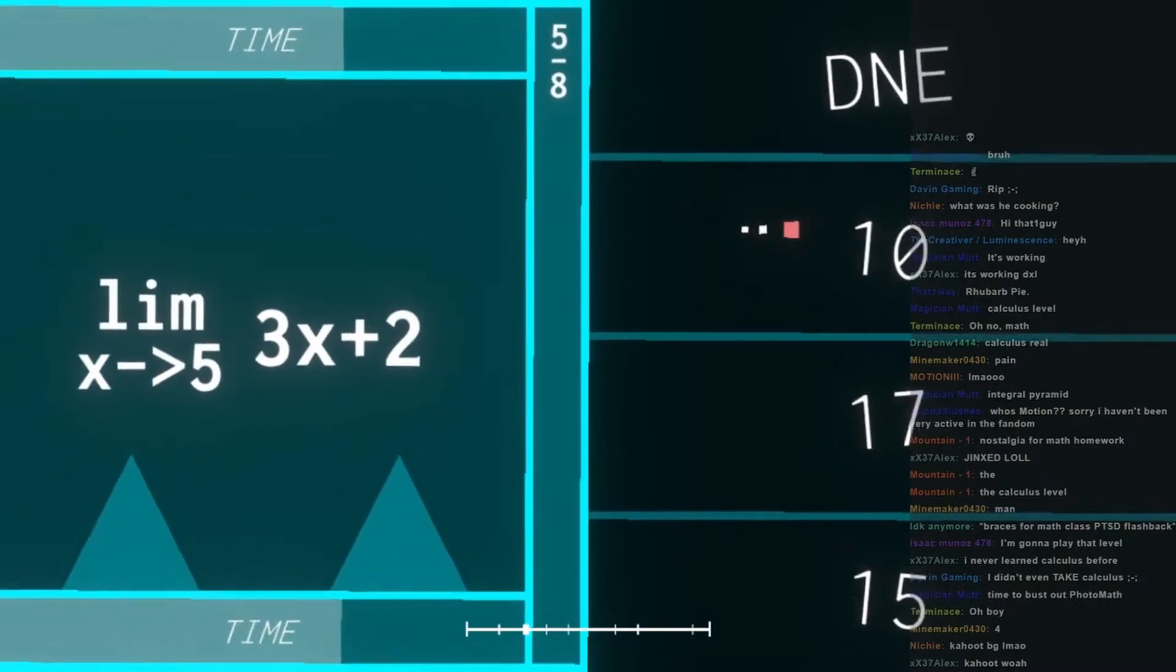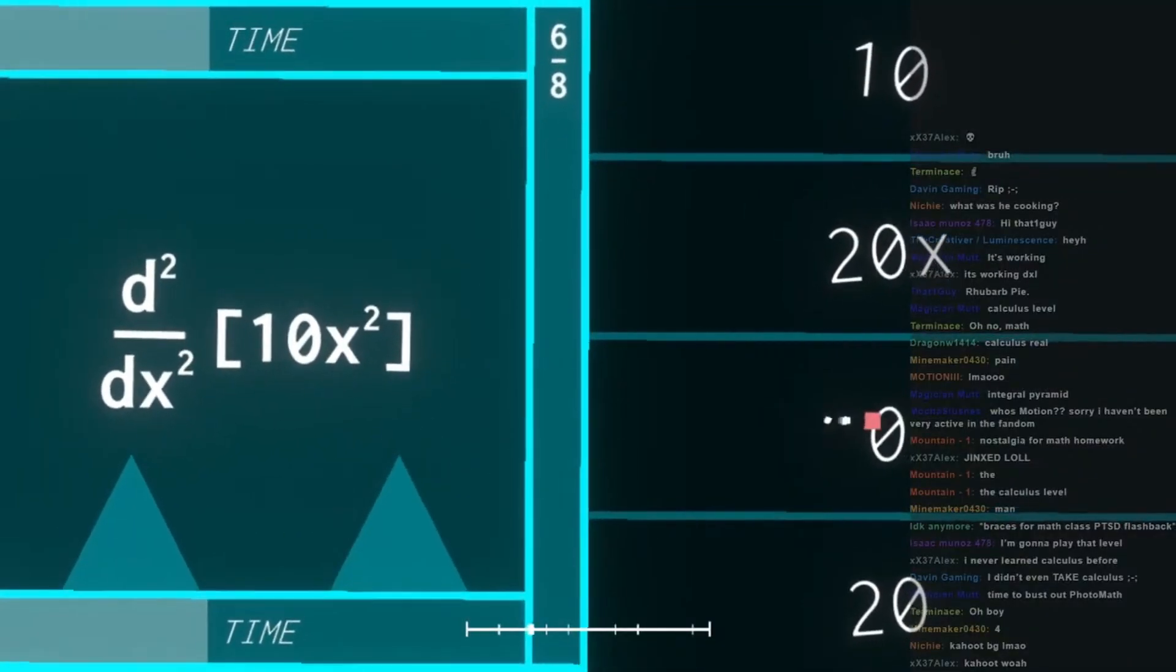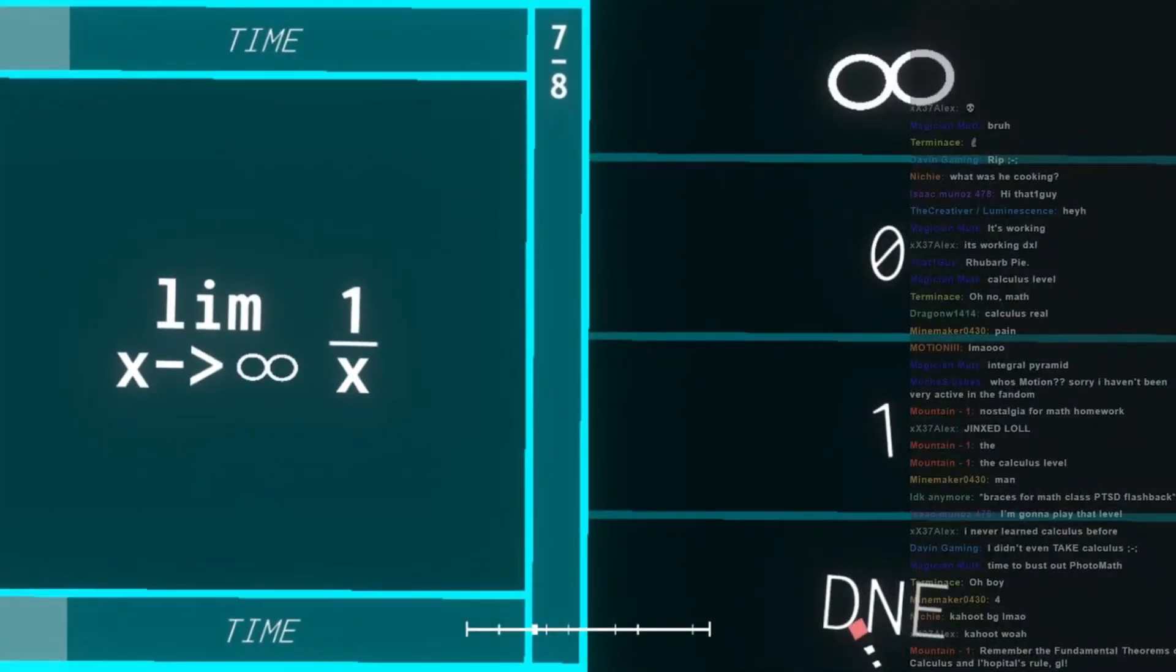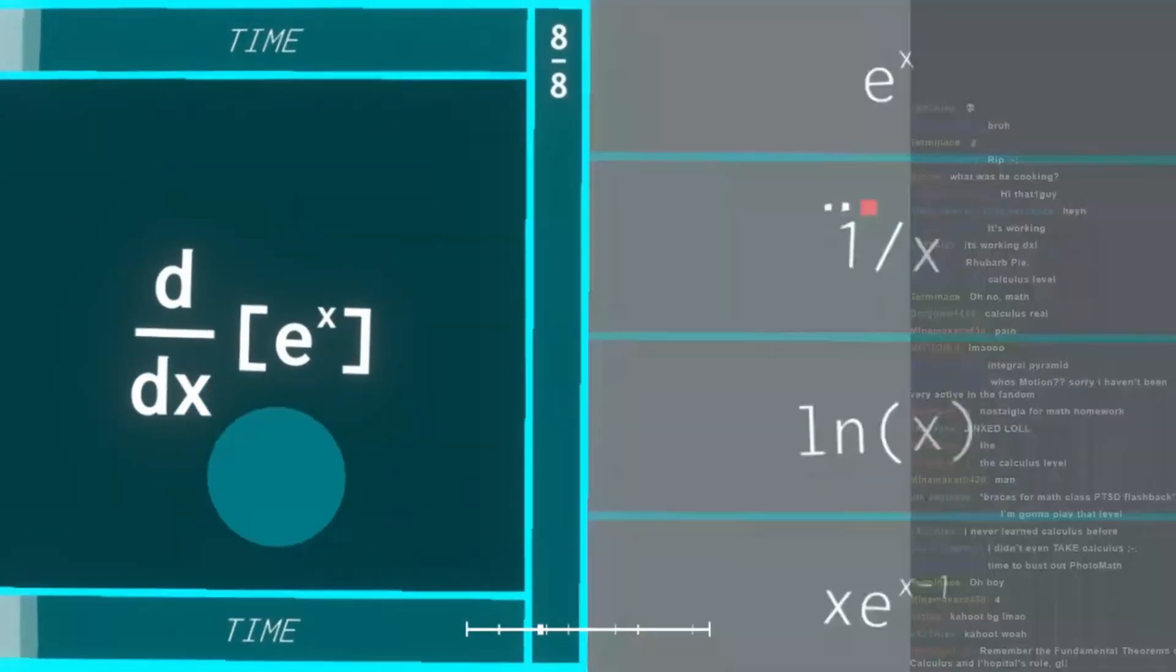Okay. X approaches 5, so as x approaches 5, 15, 17. And then 10x squared, derivative of 10x squared, it would be 20. Yeah. As x approaches infinity, 1 over x, limit 0. Yeah.